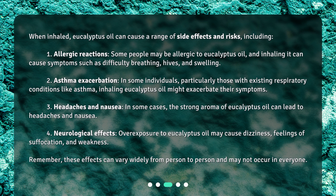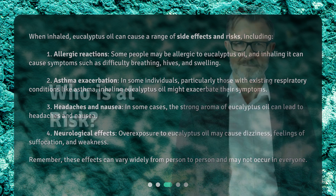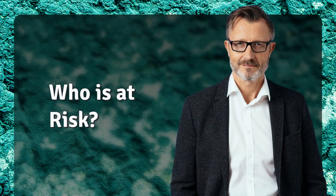3. Headaches and nausea — in some cases, the strong aroma of eucalyptus oil can lead to headaches and nausea. 4. Neurological effects — overexposure to eucalyptus oil may cause dizziness, feelings of suffocation, and weakness. Remember, these effects can vary widely from person to person and may not occur in everyone.